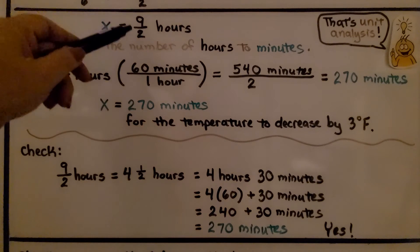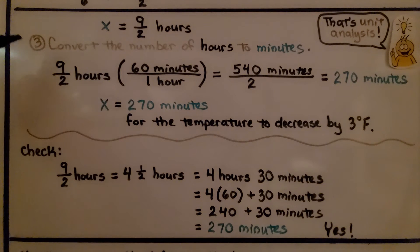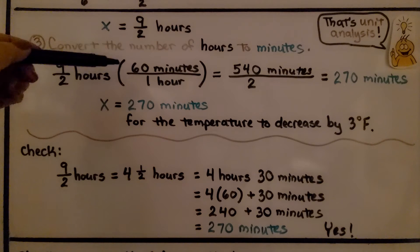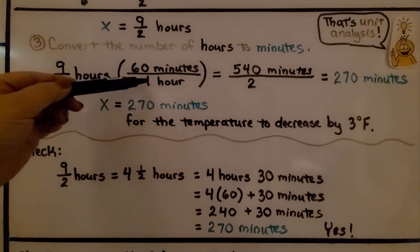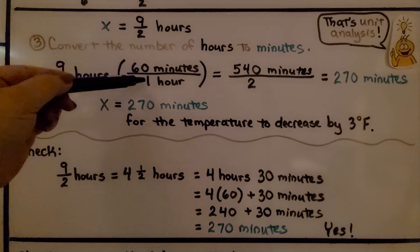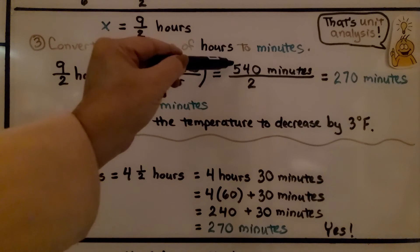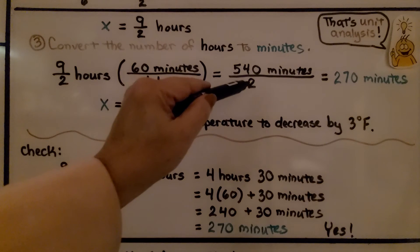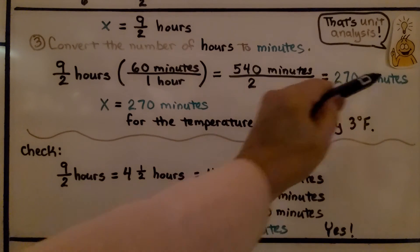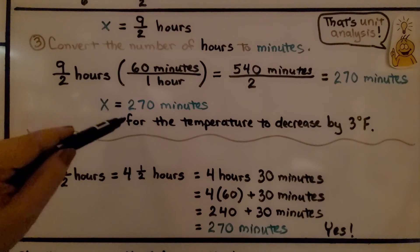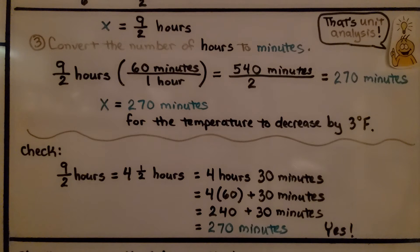Now we convert the number of hours to minutes. We have 9 halves hours, and we multiply by 60 minutes over 1 hour. 9 times 60 equals 540, and 2 times 1 equals 2, giving us 540 over 2 minutes. 540 divided by 2 is 270 minutes. So x equals 270 minutes for the temperature to decrease by 3 degrees Fahrenheit.